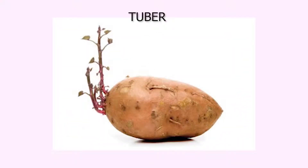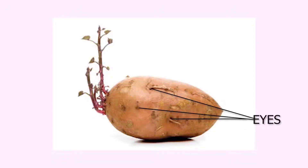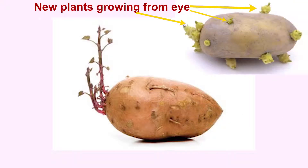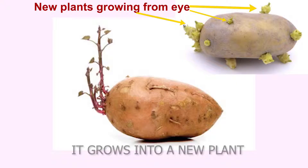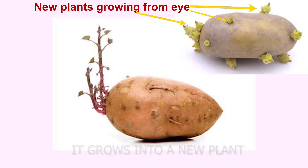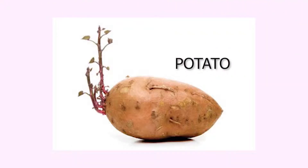Tuber is an enlarged, spherical underground stem that stores food. It has many dormant buds on its surface known as eyes. If we plant a part of tuber with the bud, it grows into a new plant. Potato is an example of tuber.